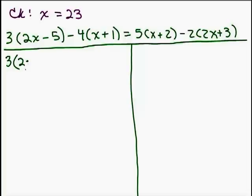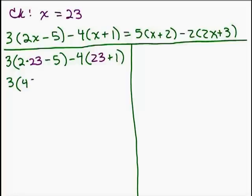2 times 23 minus 5, parentheses minus 4, parentheses, 23 plus 1. Now, let's just work on the left side first. We're going to simplify within each parentheses because we're doing order of operations. So I've got inside this first parentheses, 2 times 23 is 46. So I have 46 minus 5. And on the right-hand side, we've got 23 plus 1. That's 24.